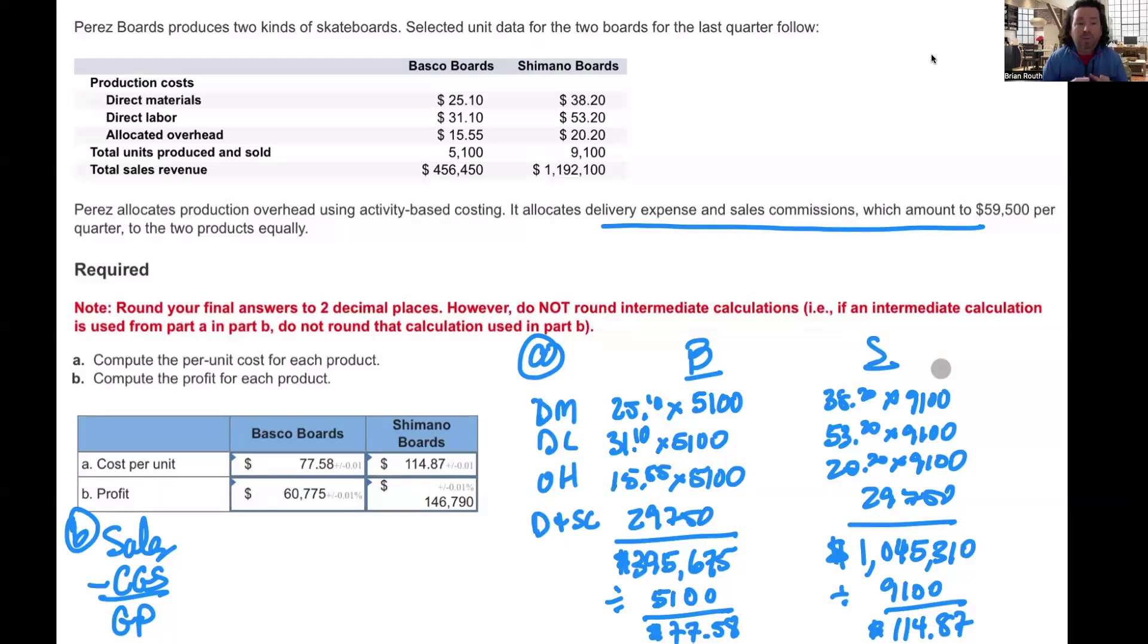Now, in Part B, we're asked to compute the profit for each product. So to get the profit, it's simply sales minus cost of goods sold gives us gross profit. So we already know the cost per product that it cost us to produce: $77.58 for the Basco and $114.87 for the Shimano. They tell us in the story up there our sales revenue for these products. So we can simply bring that down into our income statement. So for the Basco it's $456,450, and for the Shimano it's $1,192,100.